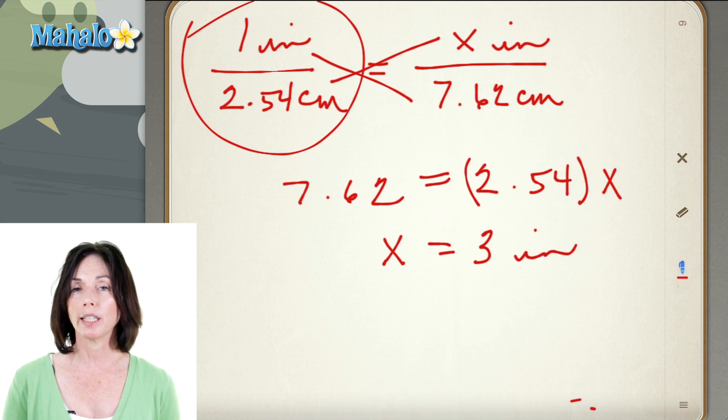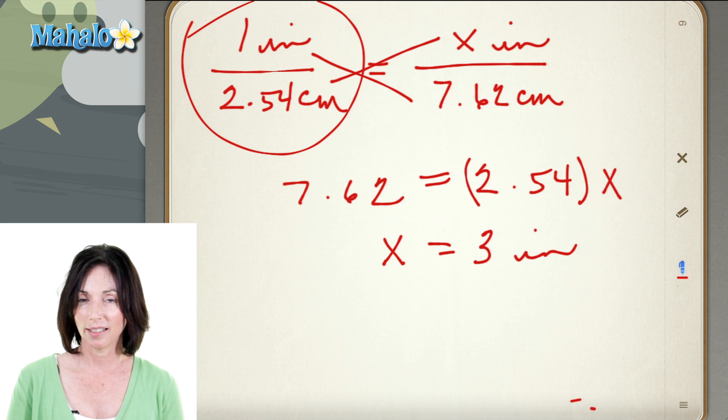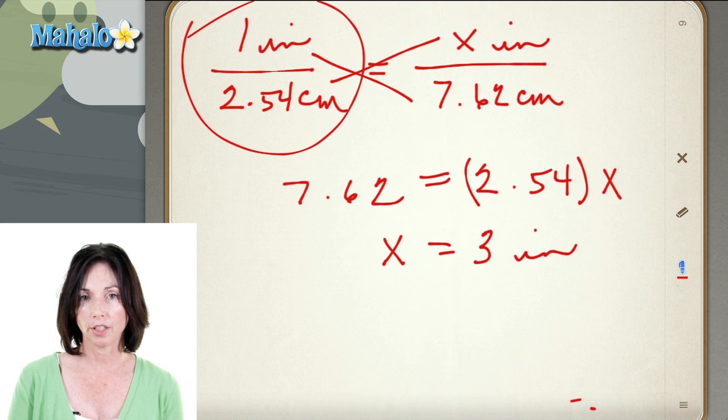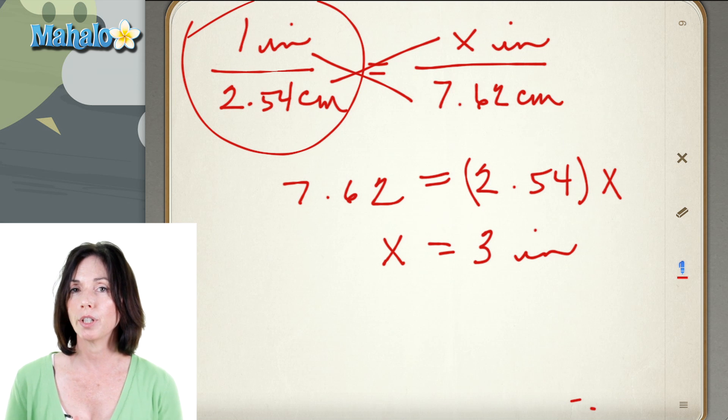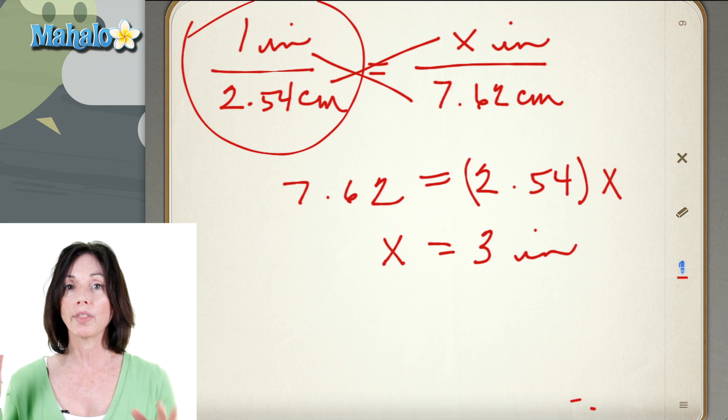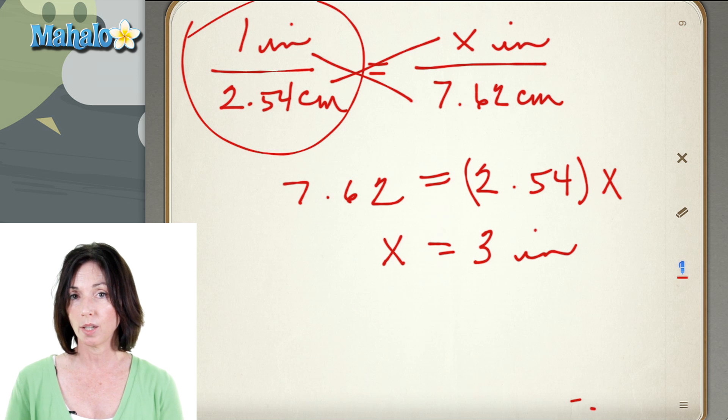So whenever you need to convert inches to centimeters or centimeters to inches this is how you can do it. You write down your conversion factor and then you set that equal to what you're trying to convert. But just make sure that your inches and your centimeters are on the same side on both sides of the equation.